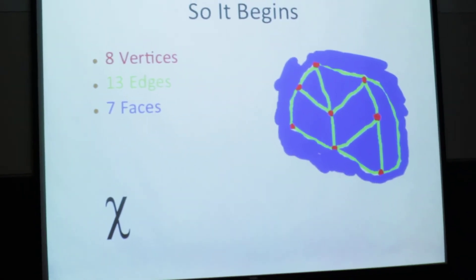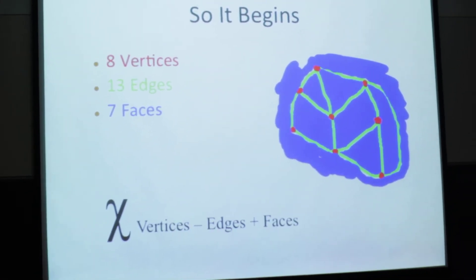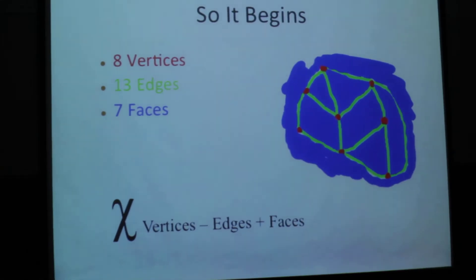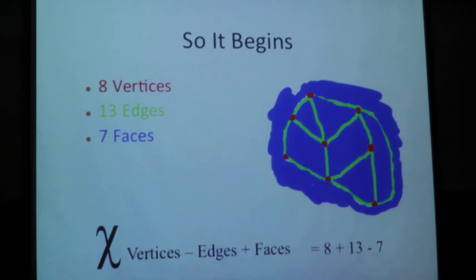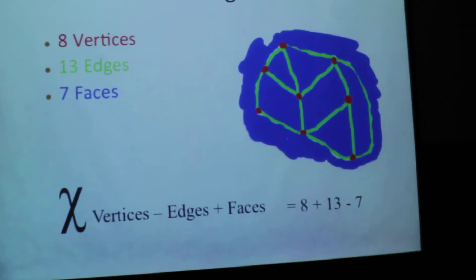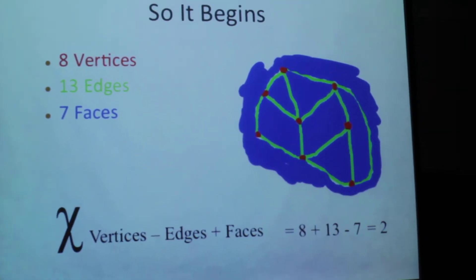And now we make a simple calculation. This is called the Euler characteristic. It's written with the Greek letter chi. But I prefer to think of it as an X that's let its freak flag fly. Vertices minus edges plus faces. So that should be eight minus thirteen plus seven, which is two.